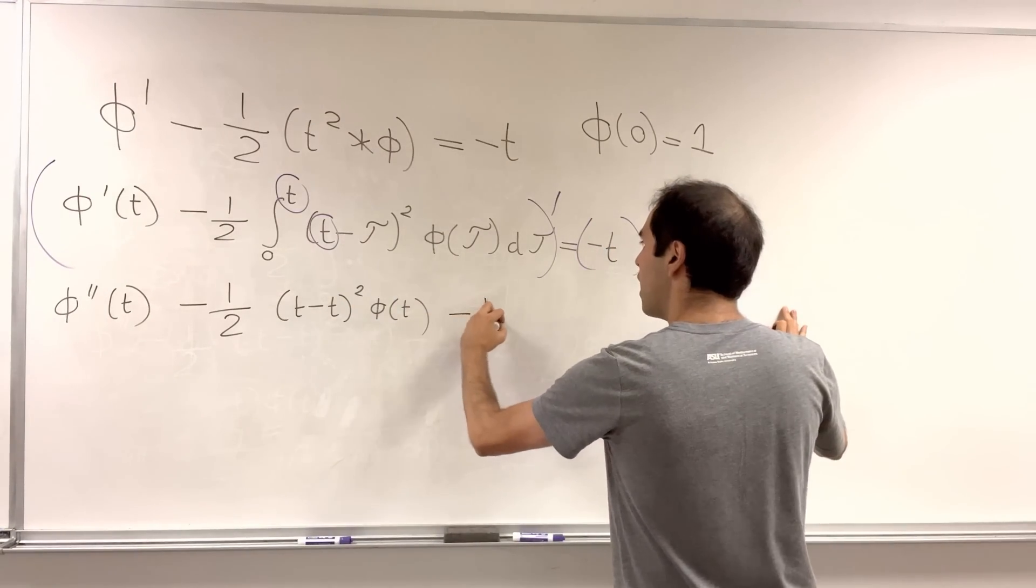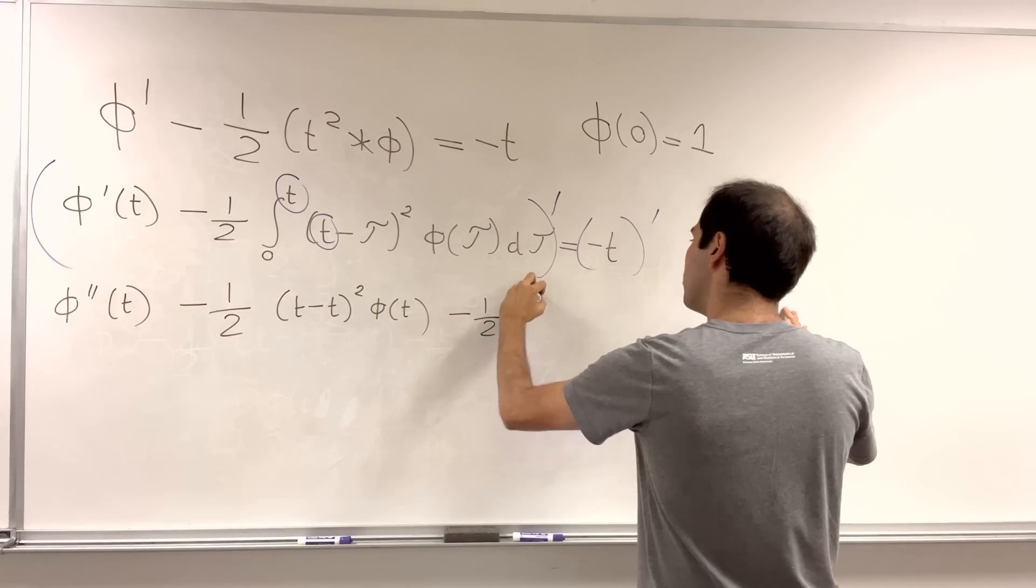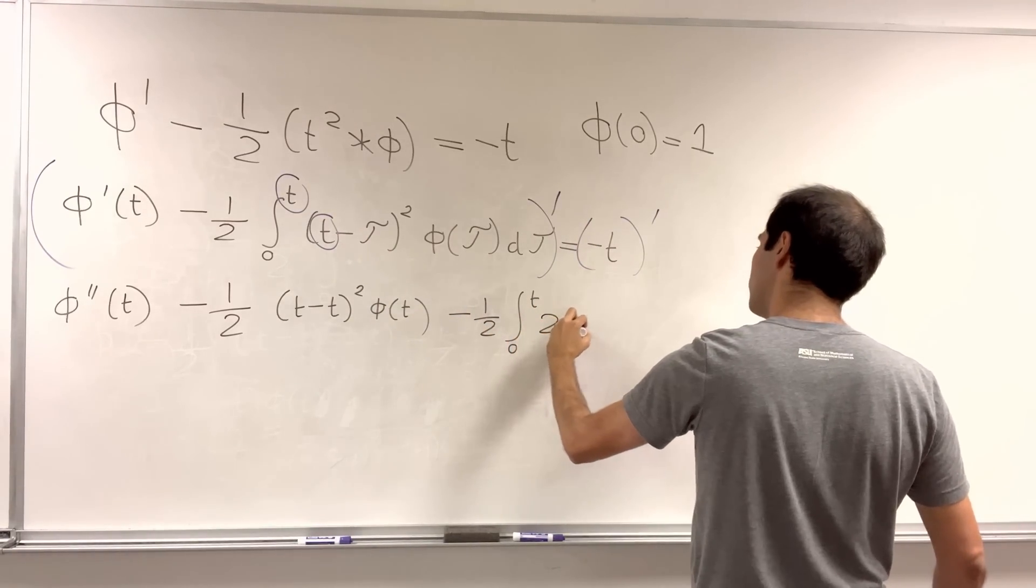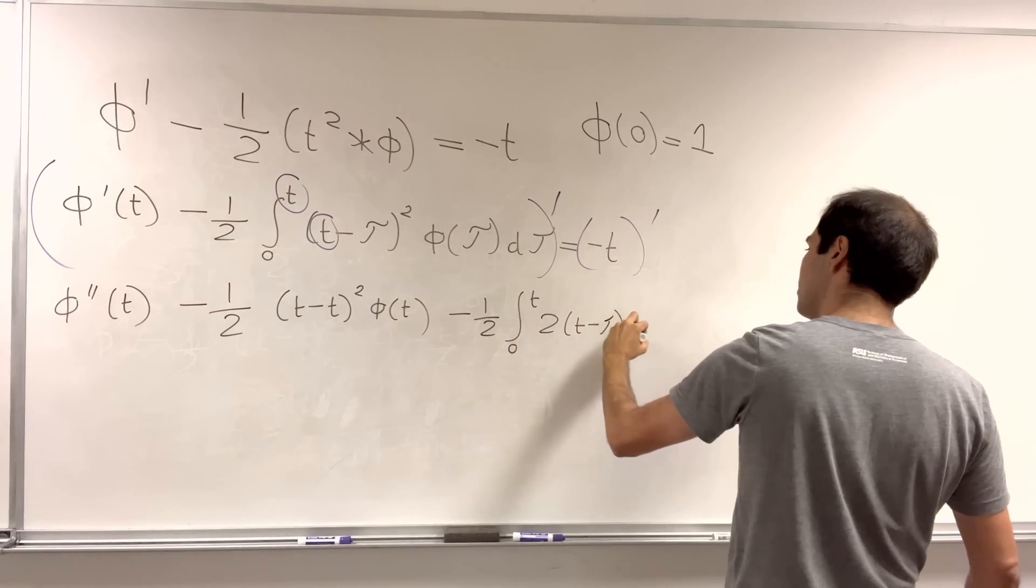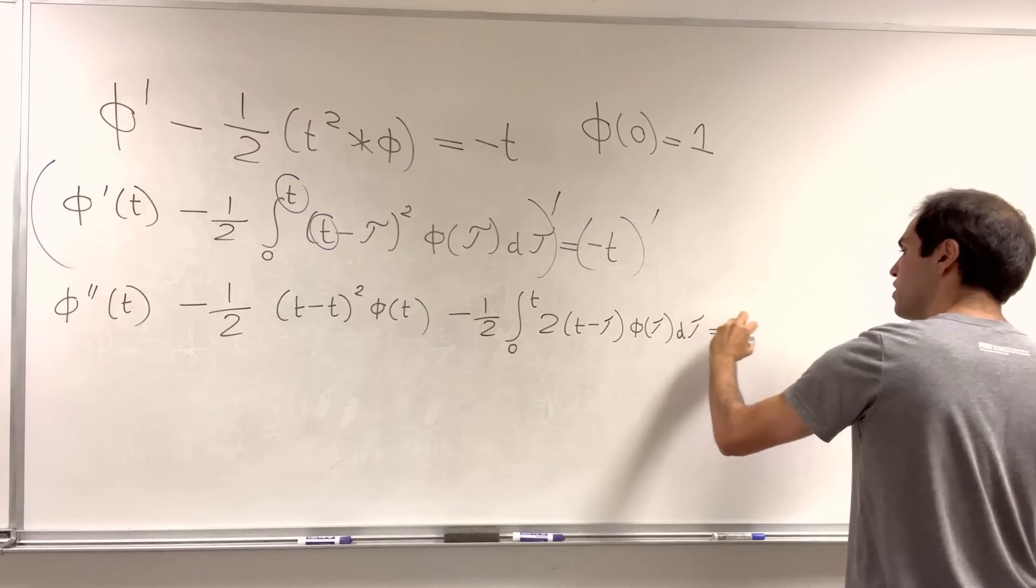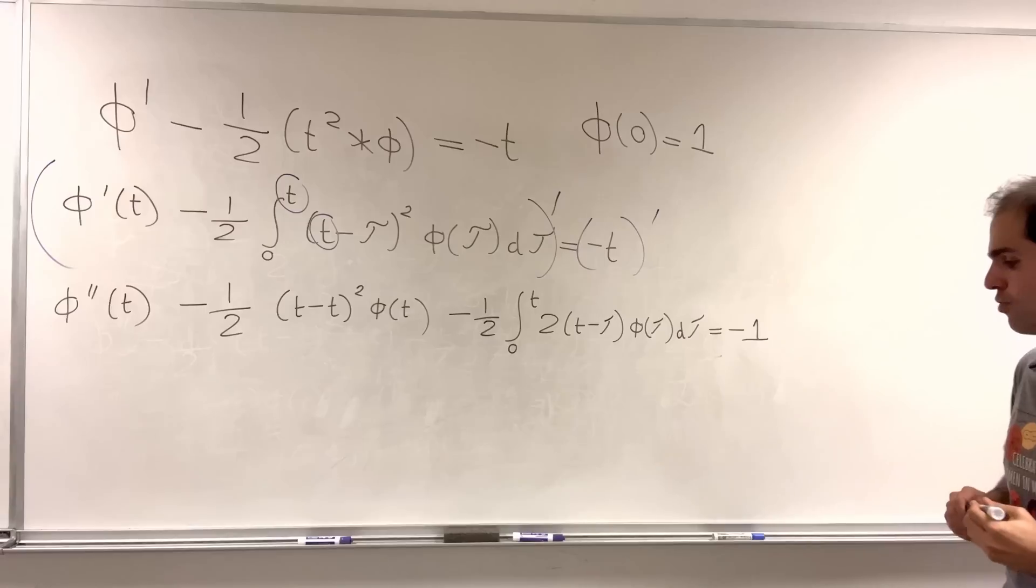And now, we need to differentiate the inside stuff. So, minus one-half integral from zero to t, this derivative. So, two times t minus tau, phi of tau, d tau, and that becomes derivative of minus t, which is minus one.